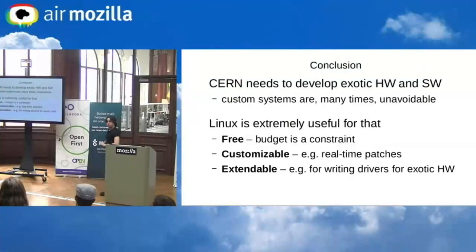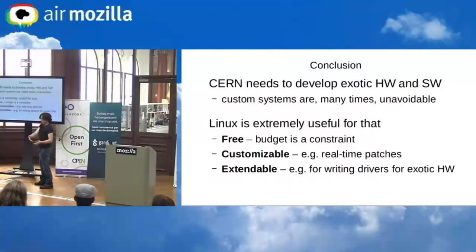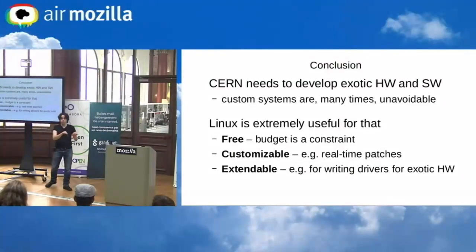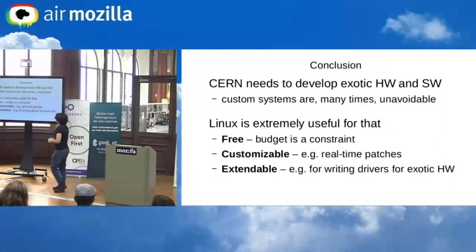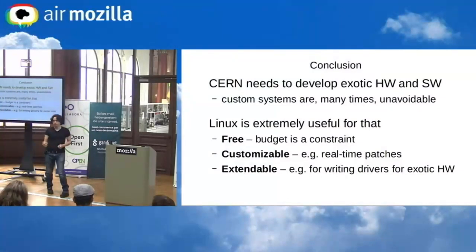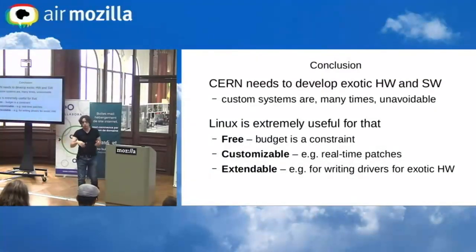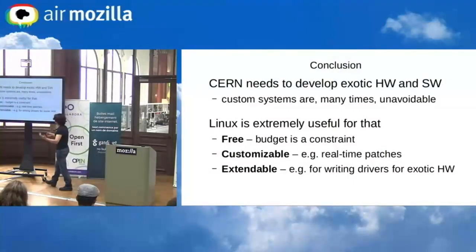In conclusion: CERN needs to develop exotic, custom systems because off-the-shelf solutions often can't meet requirements. For that, Linux is perfect. Open source in general — and Linux in particular — is free, which helps the budget. It's customizable: you can apply real-time patches, tweak them, do whatever you need. And it's debuggable — you can go to the driver author's office and work through issues together. CERN has moved most things from proprietary operating systems to Linux.